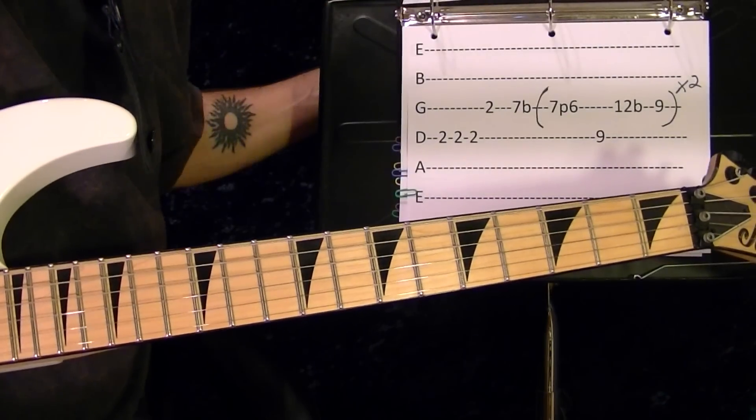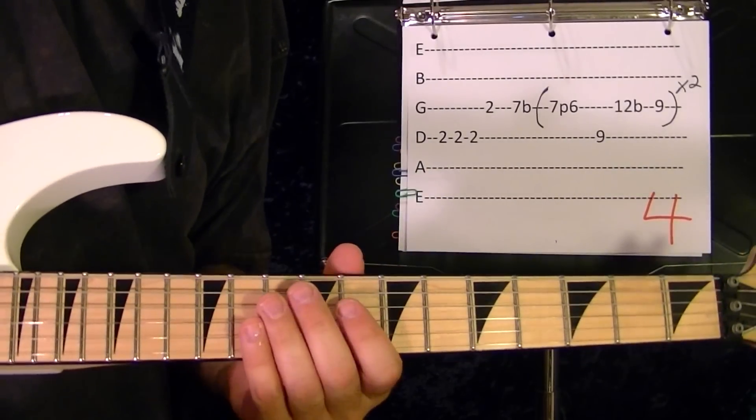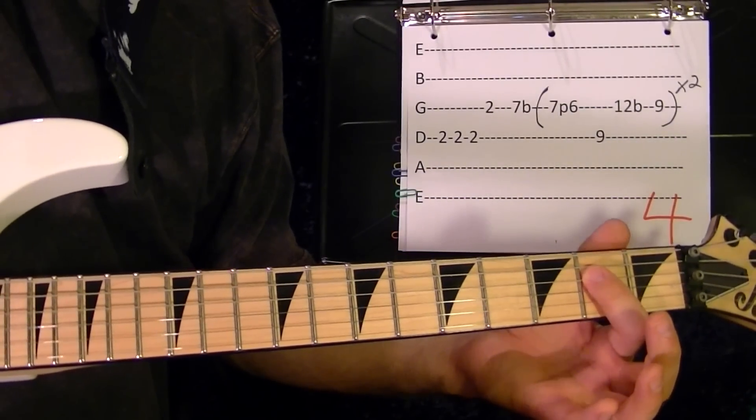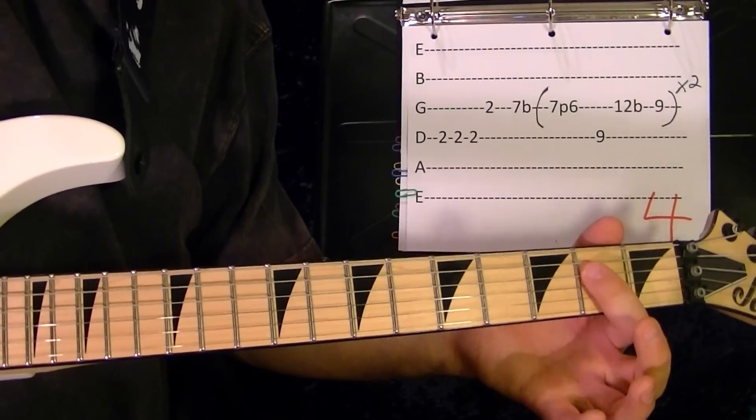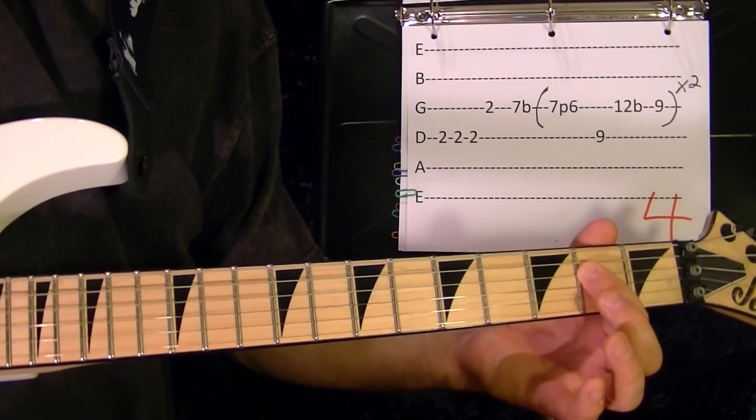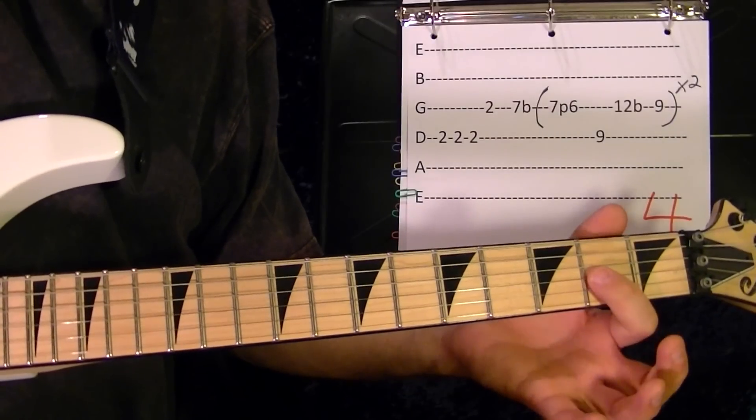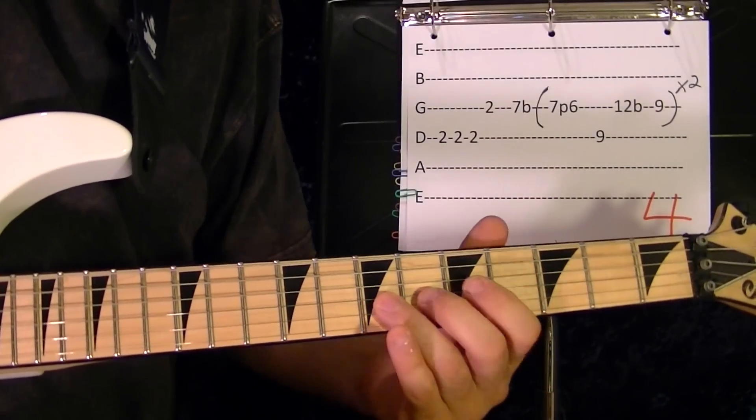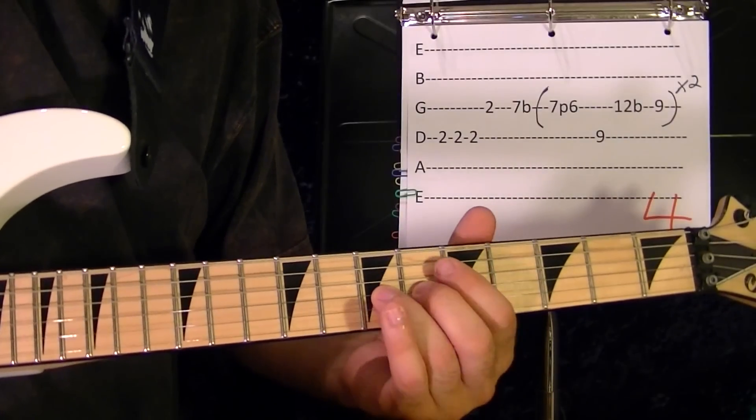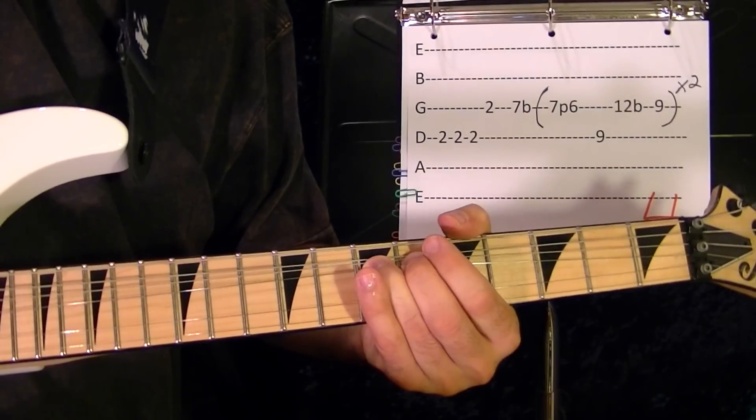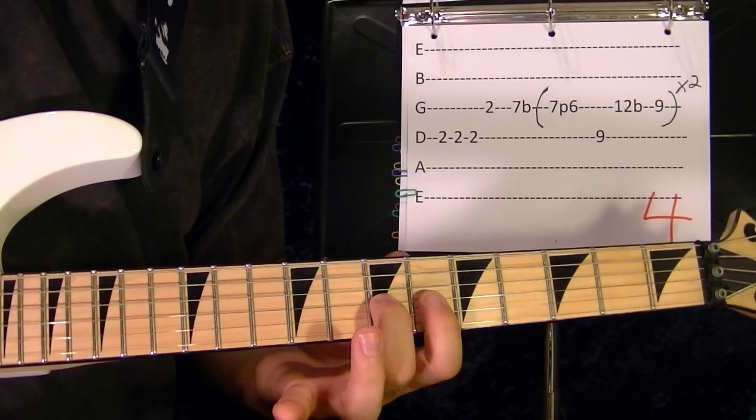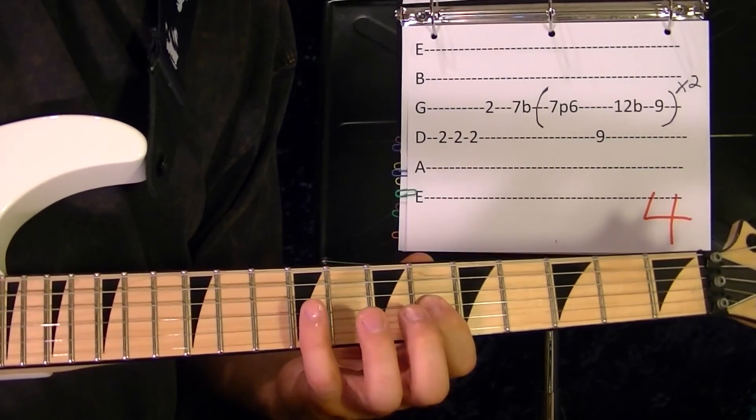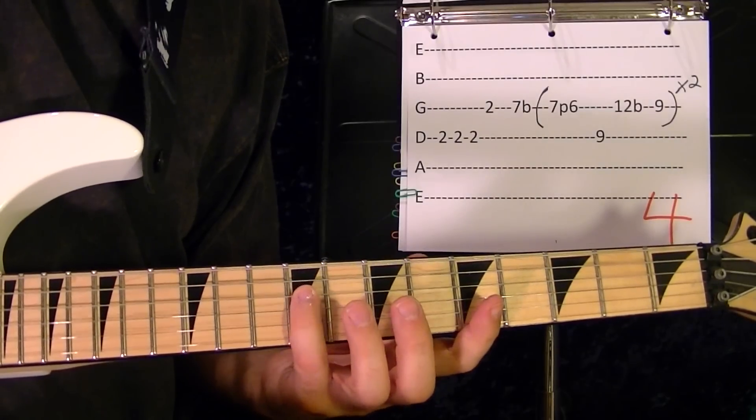And now we get into the main melody. Fourth string second fret three times, third string second fret, third string seventh bend up, third string seventh pull off to the sixth, fourth string ninth.